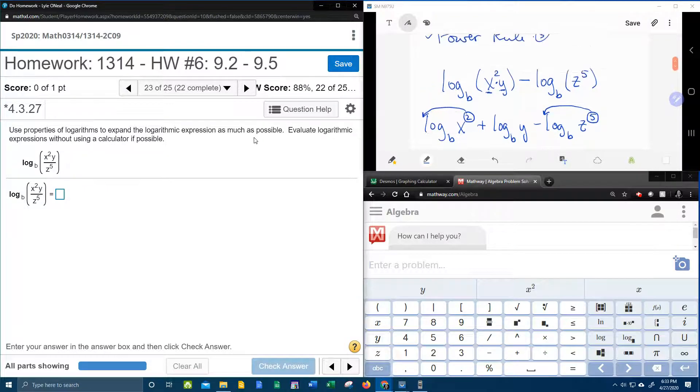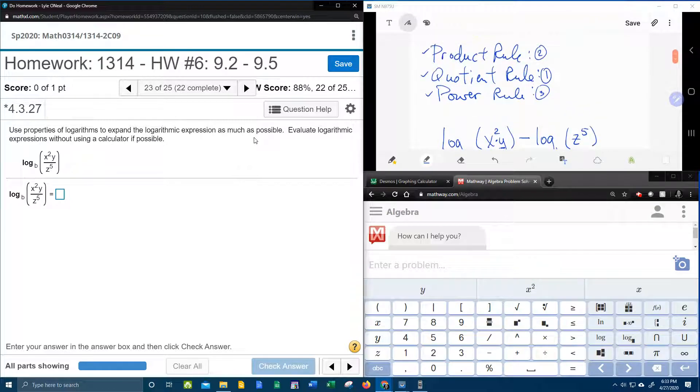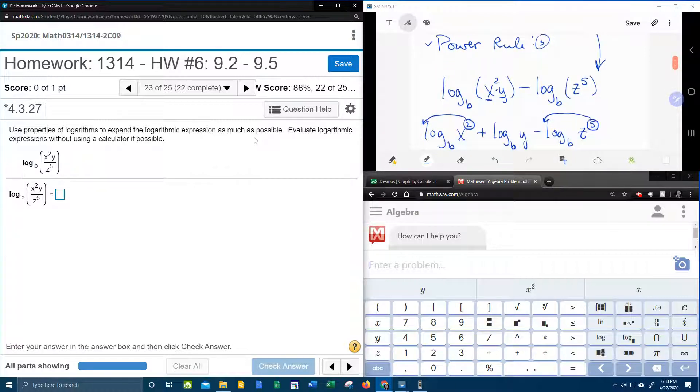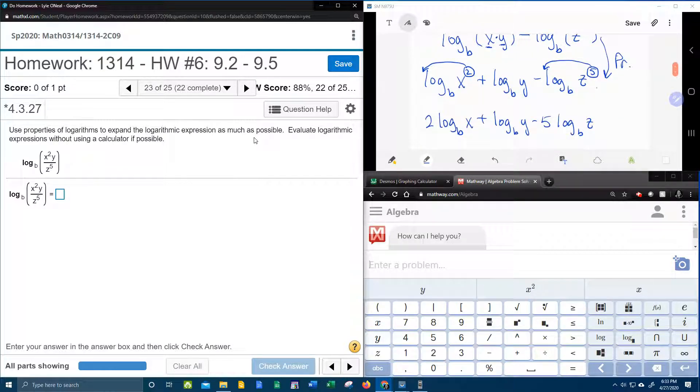And so then that was every property taken care of, okay? So the first step here was the quotient rule. Next, we did the product rule. And then next we did the power rule. And so this should be our final answer.